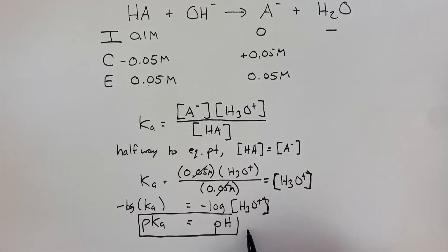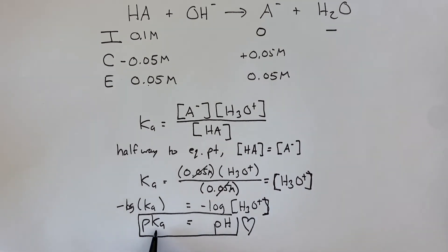So that is why we're so interested in the pH at the point halfway to the equivalence point because that gives us the pKa, and by taking 10 raised to the negative pKa I get my Ka value. So there you have it - finding the Ka value of a weak acid involves doing a titration, monitoring the pH throughout the titration.